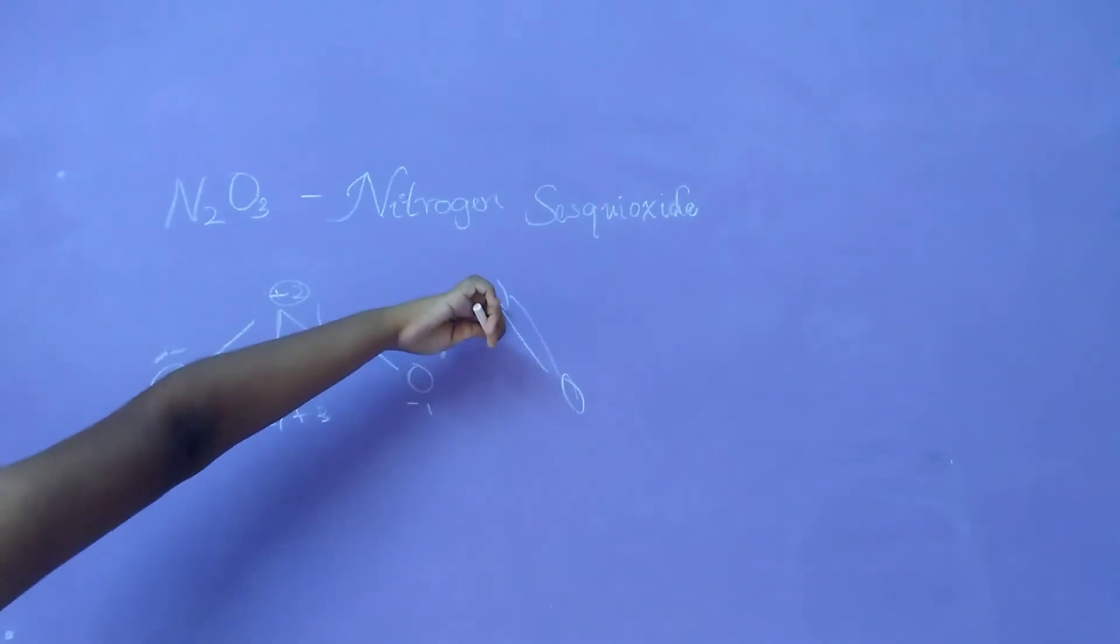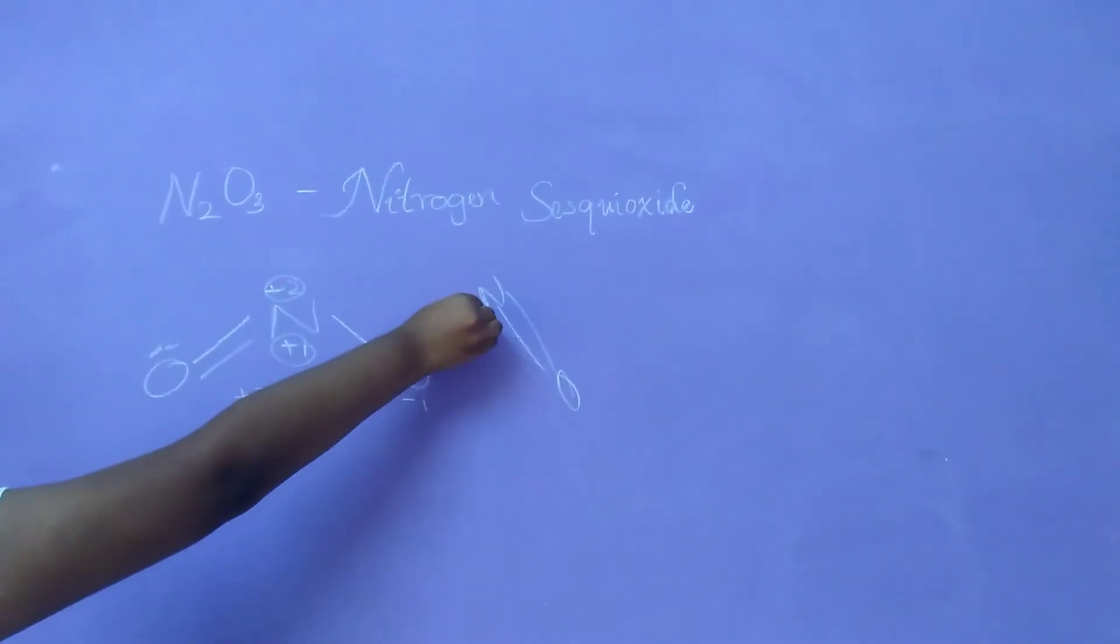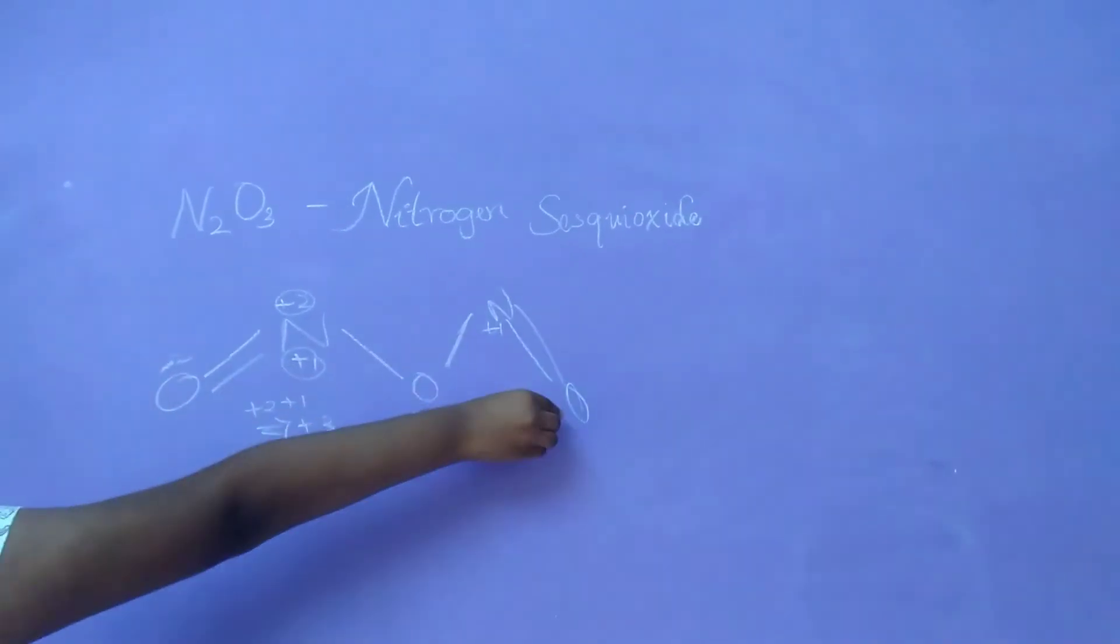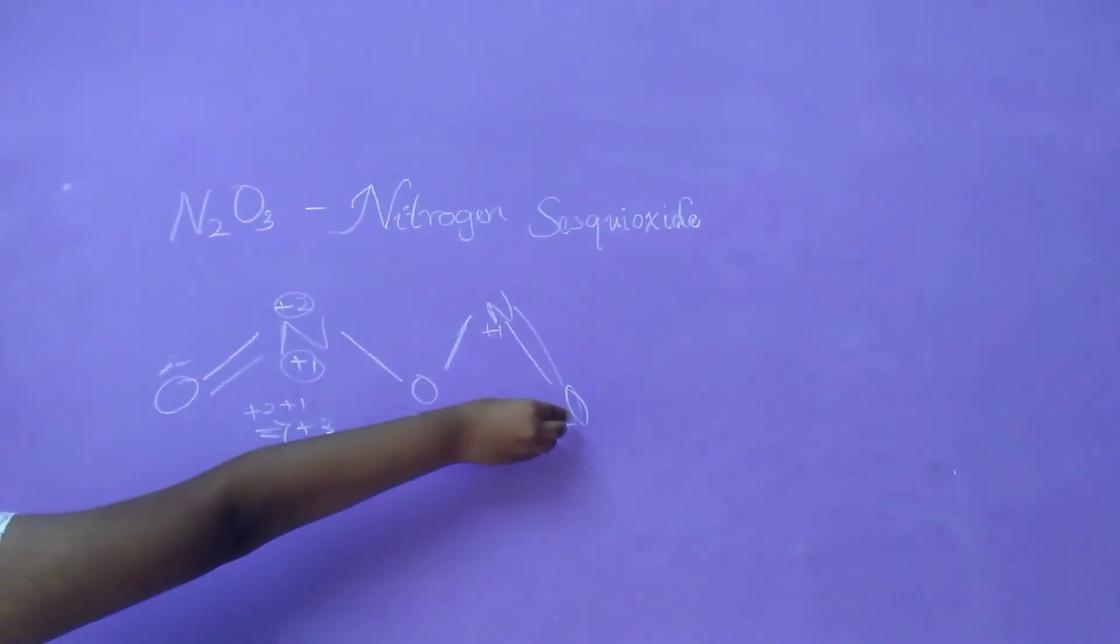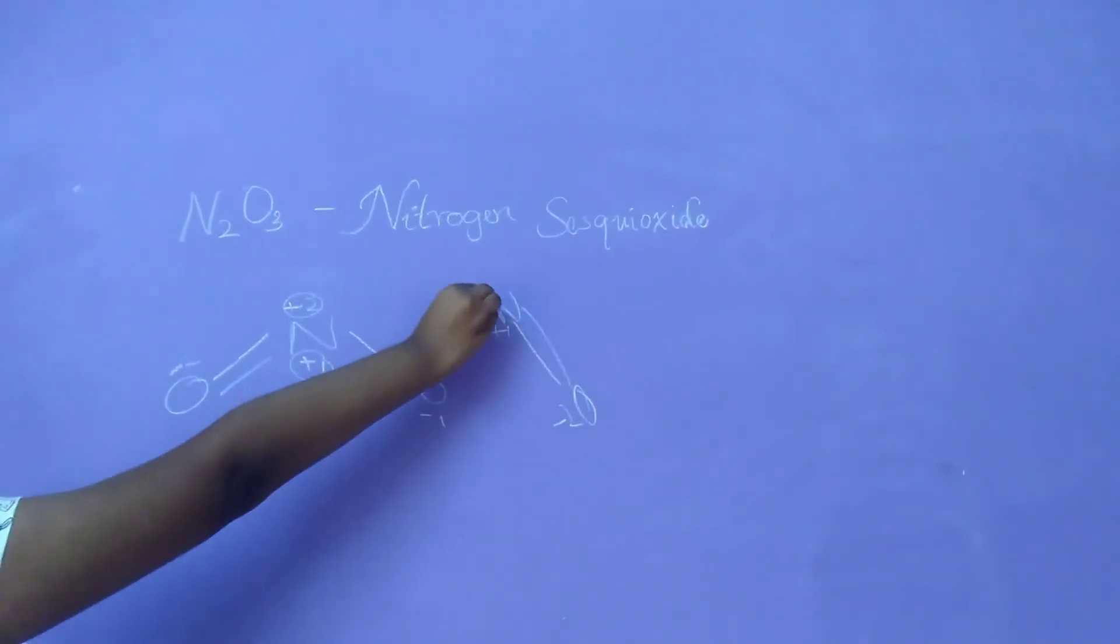And in the same way, here also. Minus 1 here. So you have to write plus 1 in this molecule. And there you see minus 2. So one oxygen molecule, which is having two bonds. So it will be plus 2.